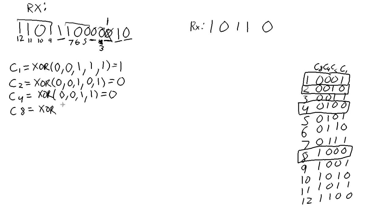Last but not least we calculate C8. We XOR bit positions 9, 10, 11, and 12 together. That gives us: one, zero, one, one — which is an odd number of ones, so this check bit is going to be a one as well.